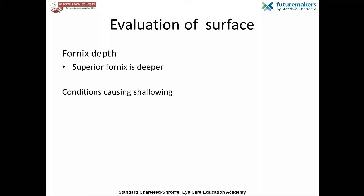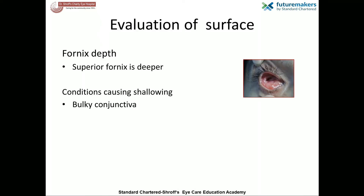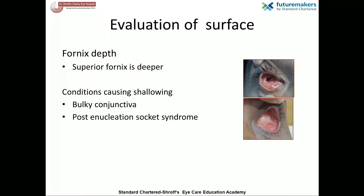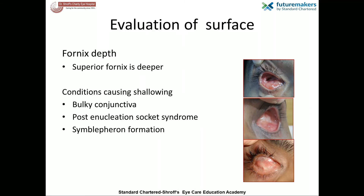The next step is the evaluation of the fornix depth. The superior fornix is normally deeper than the inferior fornix. An adequate-size inferior fornix is required for retention of the prosthesis. Bulky conjunctival tissue seen following socket reconstruction, inferior migration of the orbital soft tissue seen in post-enucleation socket syndrome, and symblepharon band formation following chemical injury can lead to an unstable prosthesis.